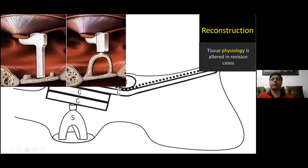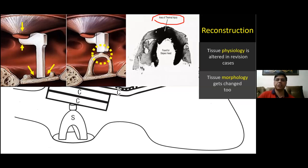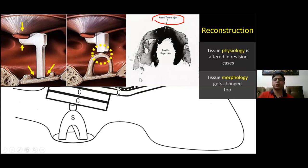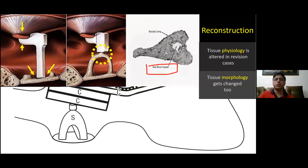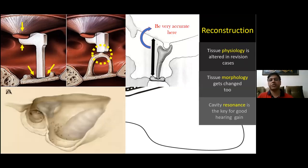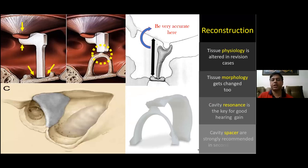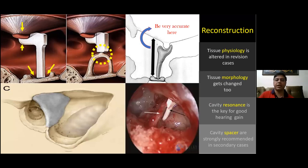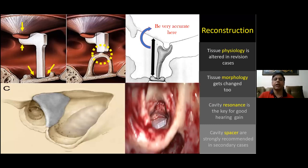Regarding ossiculoplasty reconstruction, the basic concept is the biophysics of middle ear ventilation and reconstruction. Which material you use and how you keep it there is important, because in revision cases the morphology is altered. We have seen cases where the reconstructed incus or whatever material was used was drilled by the previous surgeon without adequate irrigation, causing thermal injury to the reshaped incus or cartilage — leading to loss of hearing within two weeks. Always put a properly sized prosthesis. Cavity obliteration and ventilation are the main issues. If possible, try to reconstruct the posterior canal wall — called canal wall reconstruction. In revision cases where medial mucosa may not be healthy, put a spacer in the form of autologous cartilage or synthetic spacer.